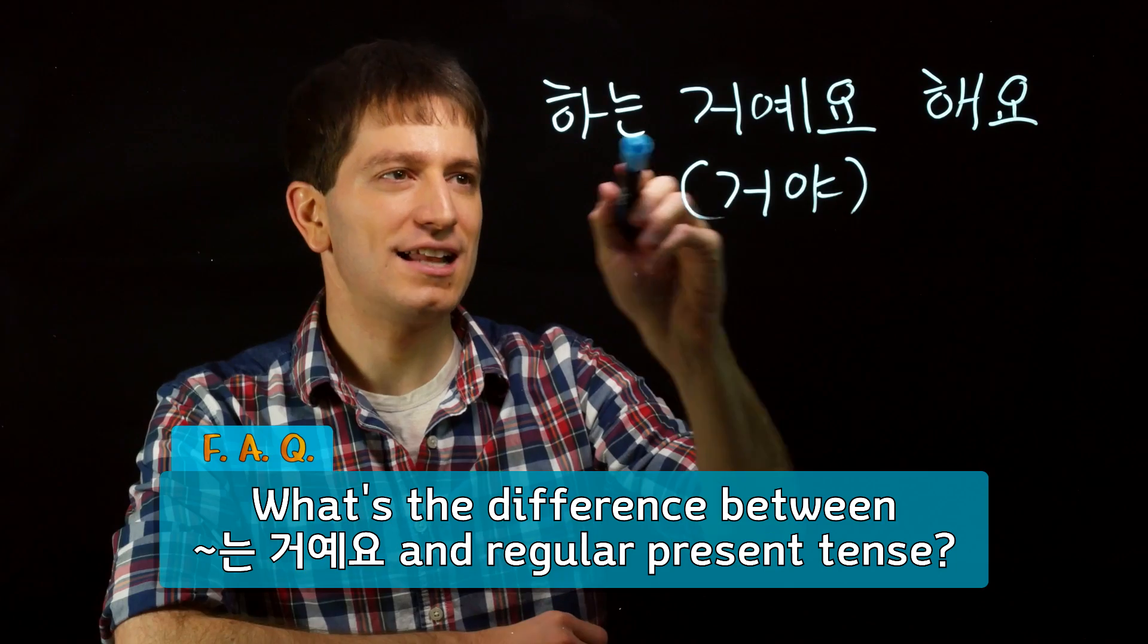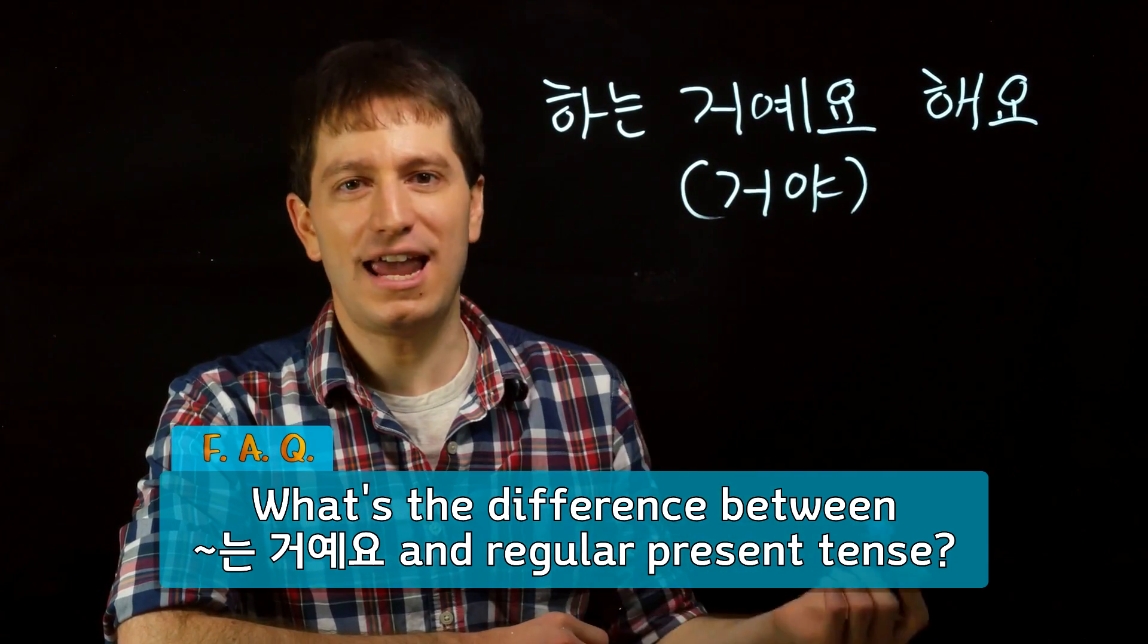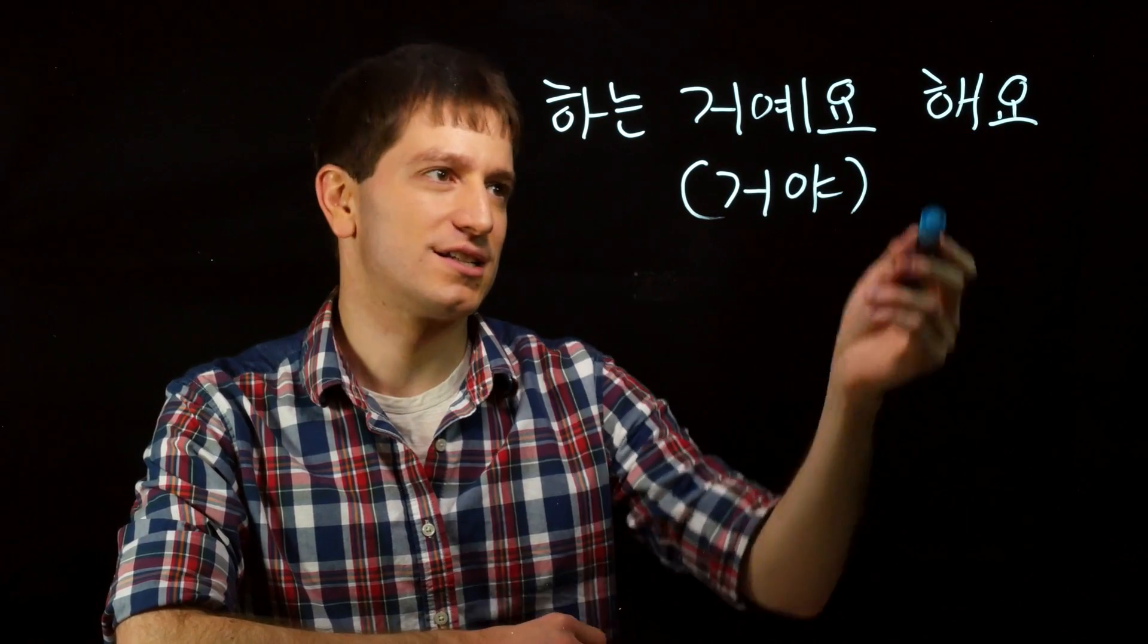Take these two sentences: 하는 거예요, or in casual speech, 하는 거야, and just the sentence 해요, or in casual speech, just 해.